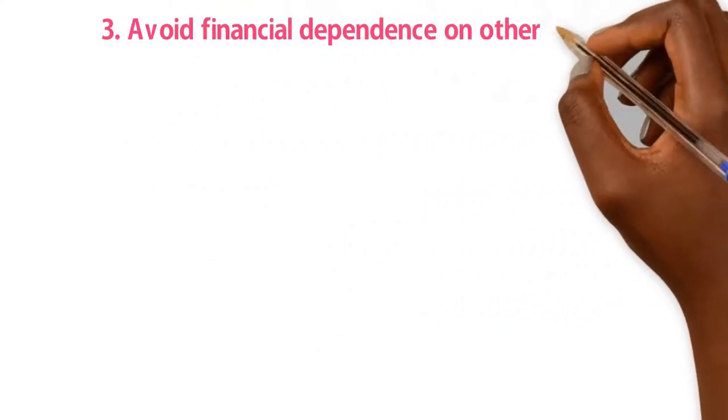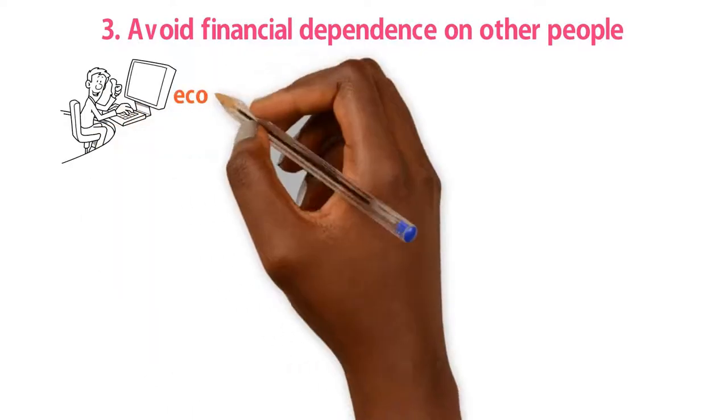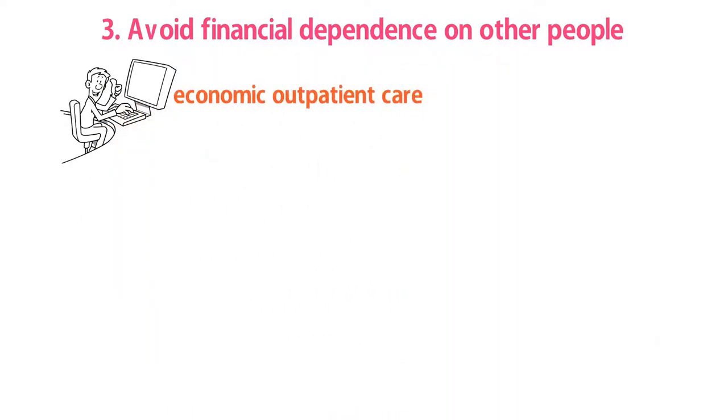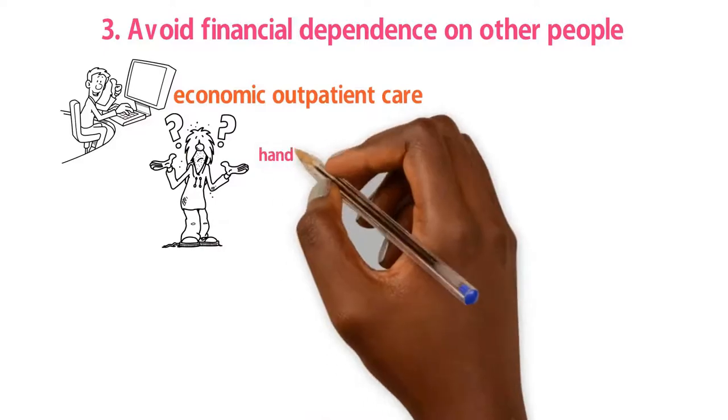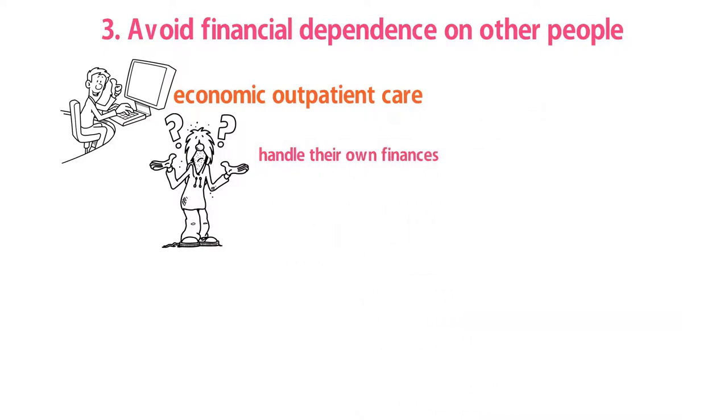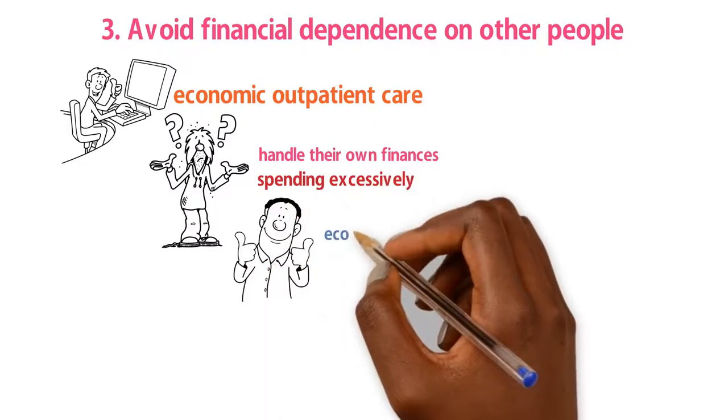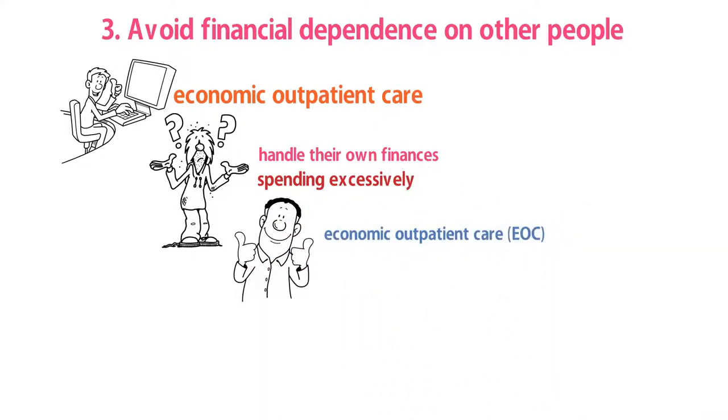Rule number three: Avoid financial dependence on other people. This is what we call economic outpatient care. You know how rich kids typically can't handle their own finances and never have to worry about spending money excessively? That's what economic outpatient care or EOC is all about.